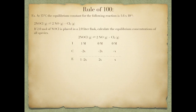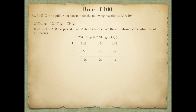I need to calculate x using the equilibrium expression — products over reactants. I take x from chlorine and multiply by 2x from nitrogen monoxide, but it becomes 4x squared because of the coefficient of 2. So the numerator is 4x squared times x, which is 4x cubed. Divided by 1 minus 2x squared, that equals my equilibrium constant, 1.6 times 10 to the negative fifth.